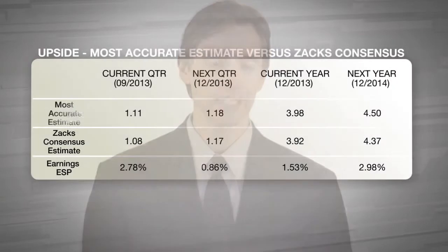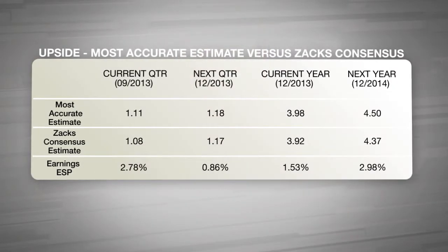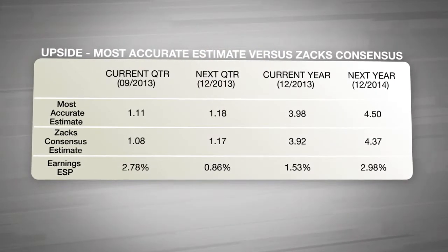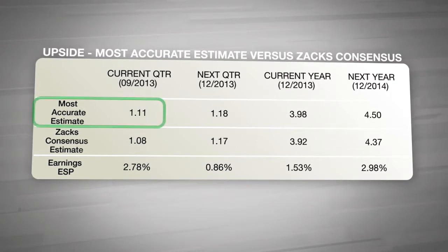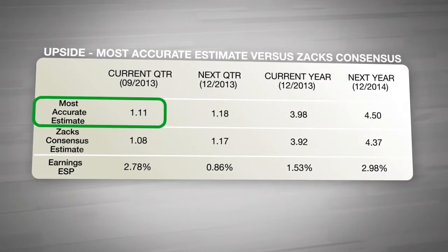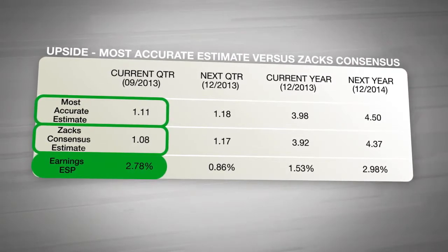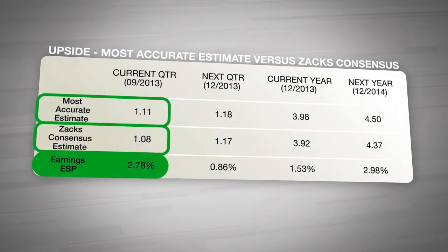Upside is the difference between the most accurate estimate as calculated by Zacks and the consensus estimate. A positive difference between the most accurate estimate and the consensus is better than a negative one, and bigger is better. The difference doesn't have to be huge, but it's a leading indication on the direction of the consensus.